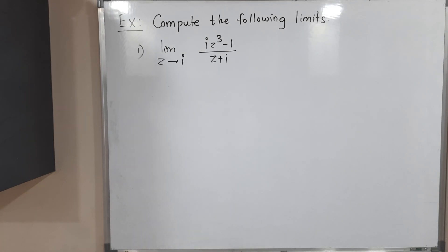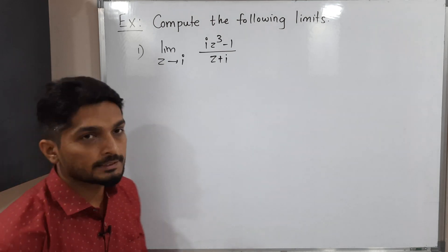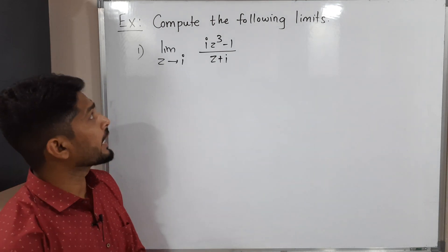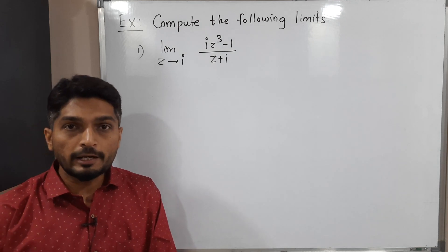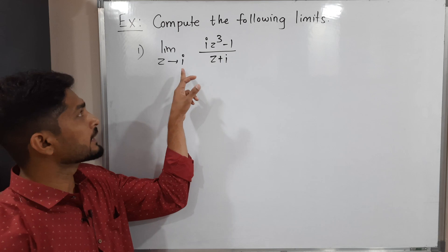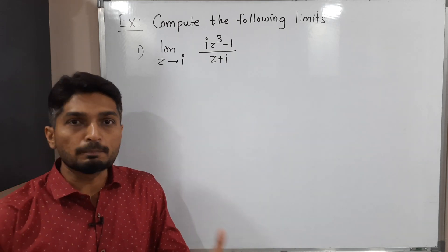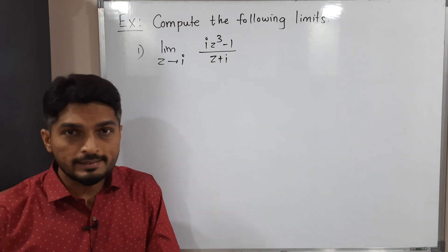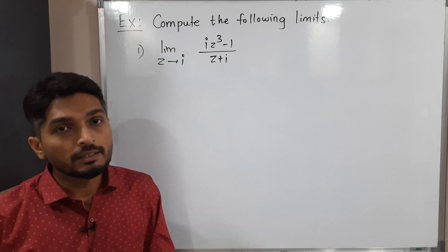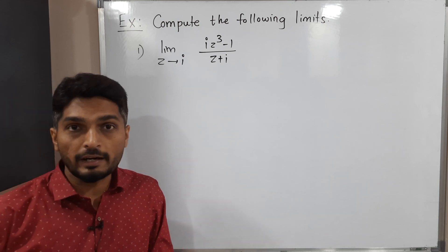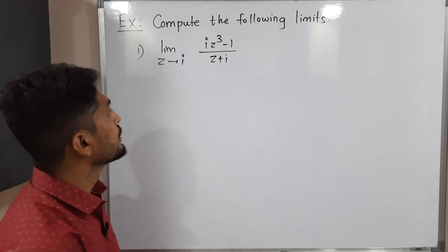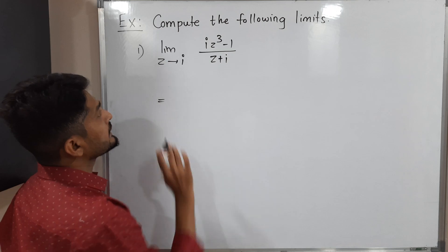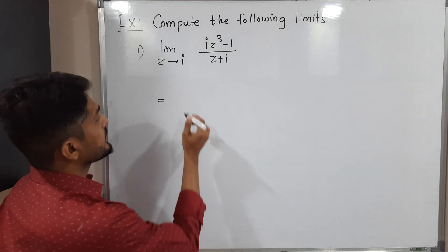In this video we are going to discuss two examples. The first example: find the value of the limit as z tends to i of (iz³ - 1)/(z + i). We will directly put the value z = i. If we get 0/0 or infinity/infinity form then that method will not work and we need to simplify further, but first we start with the direct substitution method.